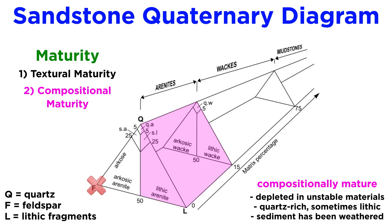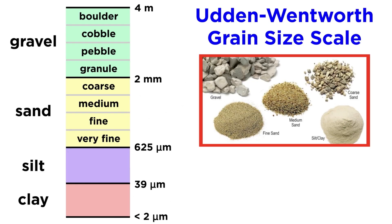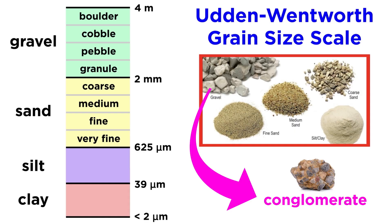Compositional maturity indicates that a rock's sediment has spent a great deal of time in a weathering environment prior to deposition and burial, sufficient to chemically alter unstable sediments. We will talk more about chemical weathering in a later tutorial. Texturally mature sandstones have well-rounded and well-sorted grains, with little to no matrix mud, indicating great transport distance from source to burial. Let's move on to the coarsest-grained sedimentary rocks: conglomerates.